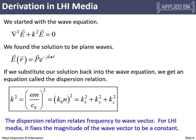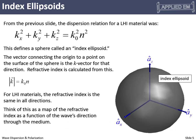Let's think of some ways to visualize the dispersion relation. At the upper left is our dispersion relation for a linear homogeneous isotropic material. This is actually the equation for a sphere where k-naught times n is the radius — that defines a sphere called the index ellipsoid. The index ellipsoid is a map of refractive index as a function of direction. If we pick a direction, start at the origin, and head out in that direction, where that intersects the surface of the index ellipsoid, that magnitude will be the refractive index.